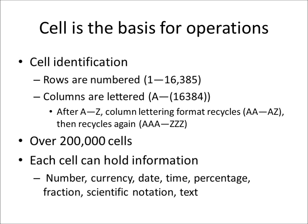Remember that the cell is the basis for operations. Rows are numbered and columns are lettered from A to ZZZ, representing 16,384 columns, meaning we have over 200,000 cells, each of which can hold information. The format for each cell can be numbers, currency, date, time, percentage, fraction, scientific notation, or text.